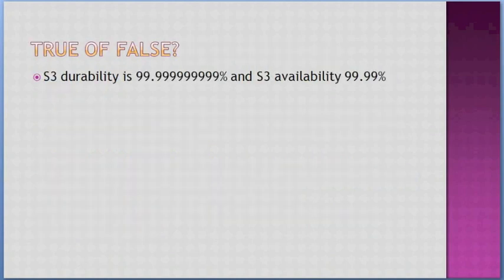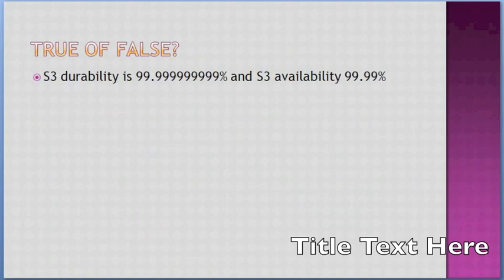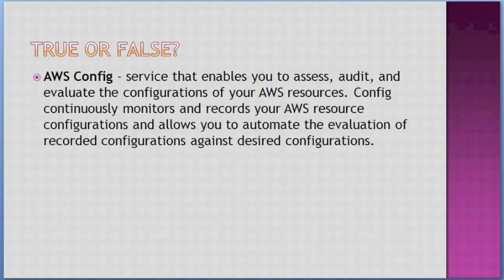True or false — S3 durability is 99.999999999% (eleven nines) and S3 availability is 99.99%. Answer: True. True or false — AWS Config is a service that enables you to audit and evaluate the configurations of your AWS resources. It continuously monitors and records your AWS resource configurations and allows you to automate the evaluation of recorded configurations against desired configurations. Answer: True.